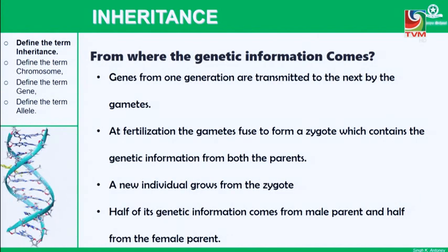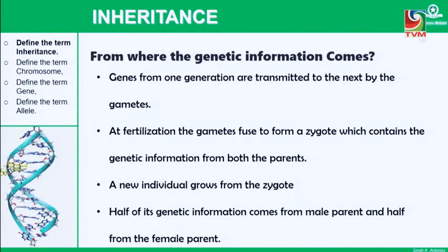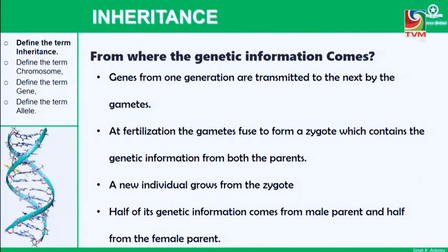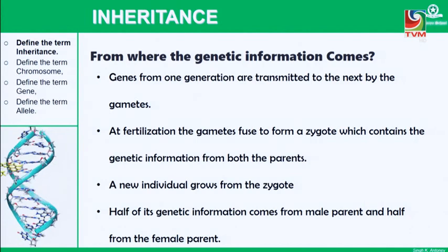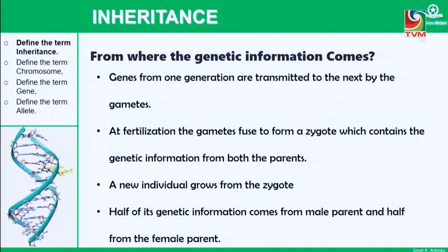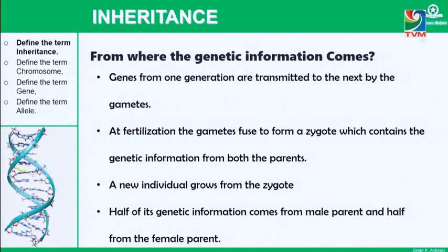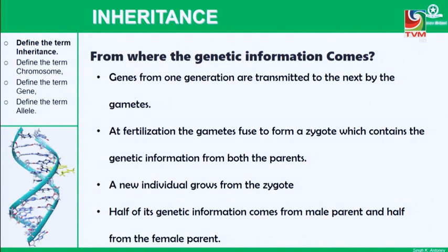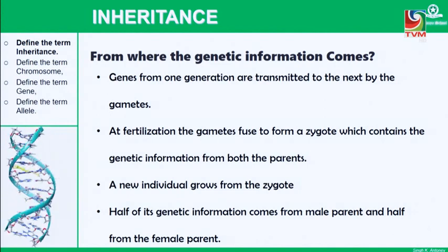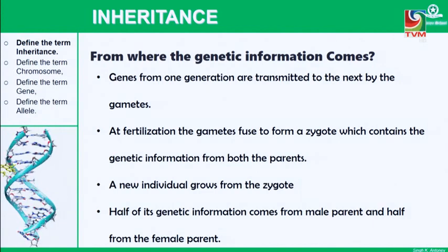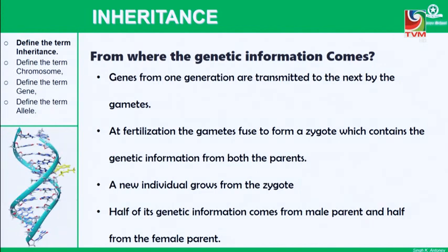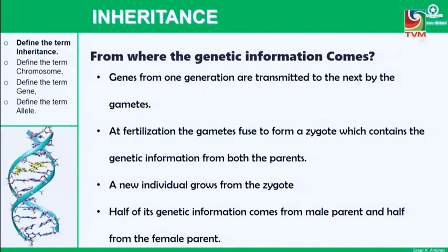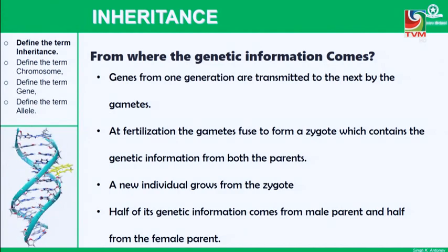Genetic information is transferred through gametes. Genes from one generation are transmitted to the next by the gametes, and at fertilization the gametes fuse to form a zygote which contains genetic information from both parents. A new individual grows from the zygote — half its genetic information comes from the male parent and the other half from the female parent.